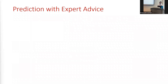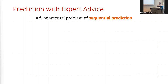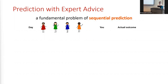The prediction with expert advice is a well-studied problem. I'm sure many of you have seen it before, but it's a fundamental problem of sequential prediction. In this problem we have a number of experts who give advice on some particular problem, and we'd like to utilize the advice of the experts to have a good success rate in predicting whatever outcome we're looking for. For example, suppose we have four experts and we're trying to predict the weather on each day.